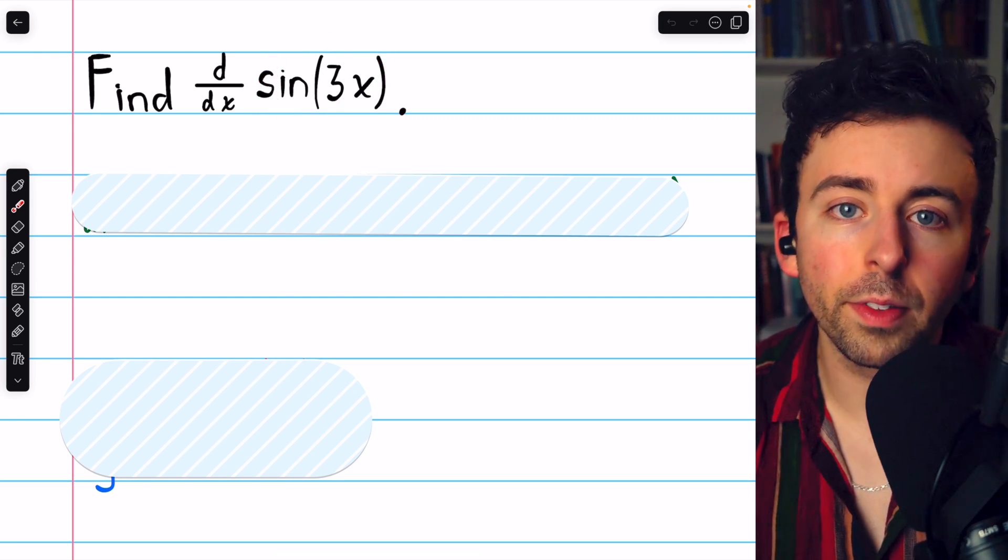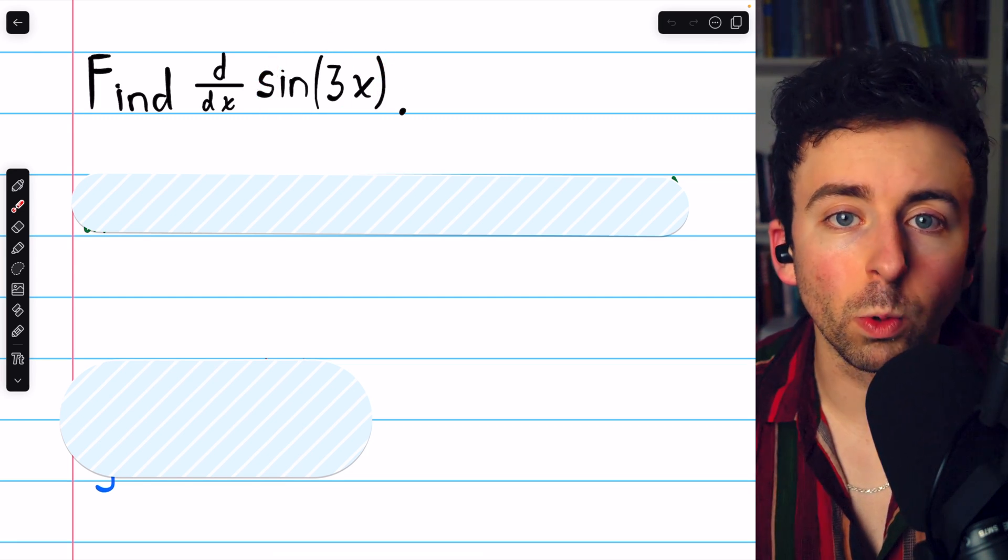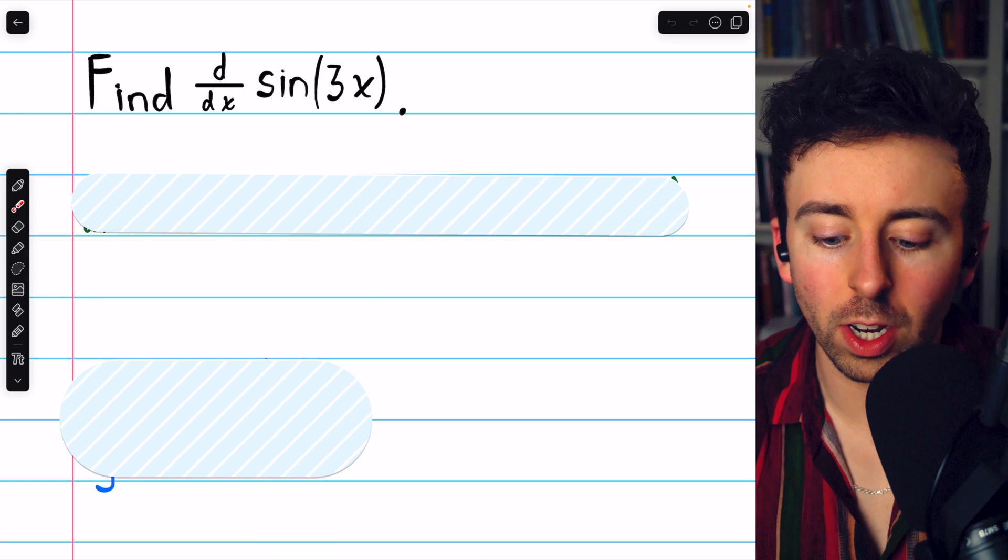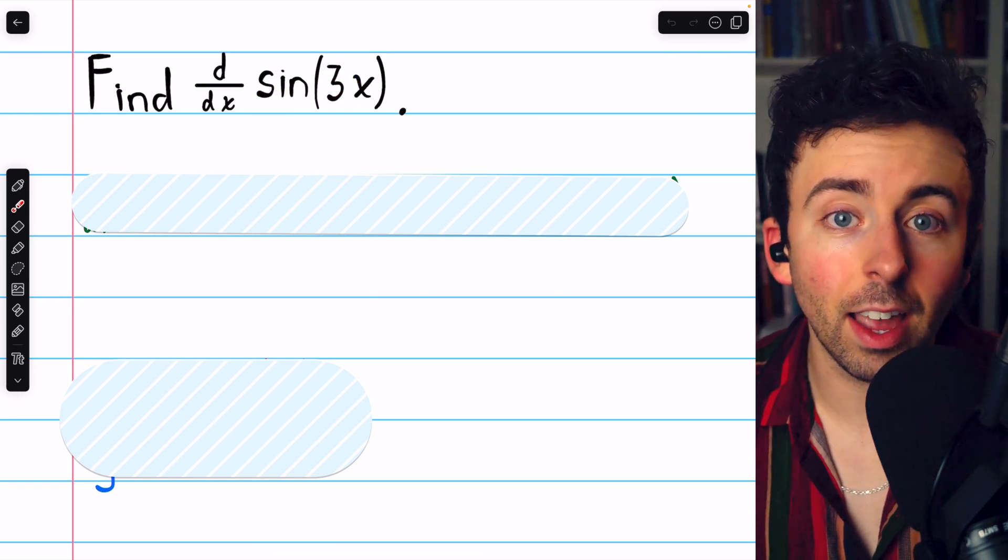To find the derivative of sine of 3x, we must use the chain rule because it's a composite function, 3x inside the sine function.